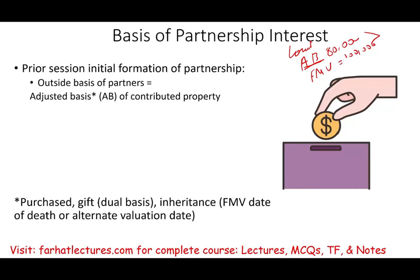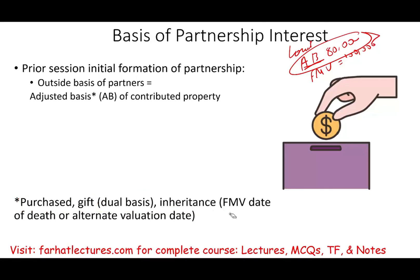How do we come up with the adjusted basis? Maybe you purchased this land for $80,000, maybe it was gifted to you and you used the dual basis rules, or maybe you received it as an inheritance at fair market value on the date of death or an alternate valuation date. You want to make sure you know how to compute the basis in the first place. That's part of the outside basis.